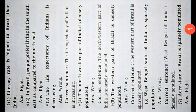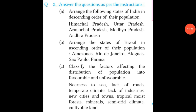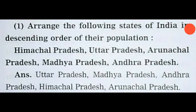This is the answer for question one. First is right, second is also right. Third is wrong — correct sentence: the life expectancy of Indians is increasing. Fourth is also wrong — correct sentence: the north western part of India is partially populated. Fifth is also wrong — correct sentence: the western part of Brazil is sparsely populated. Sixth is wrong — correct sentence: West Bengal of India is densely populated. Seventh is right.